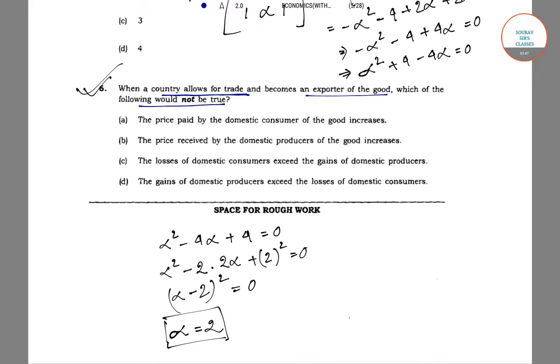So which one of the following is false or not true? If you think wisely or rationally, you can understand the fact that if a country is allowing trade and becomes an exporter of the good, the domestic producer is getting benefit from the trade, but it should not be at the cost of the loss of domestic consumers.